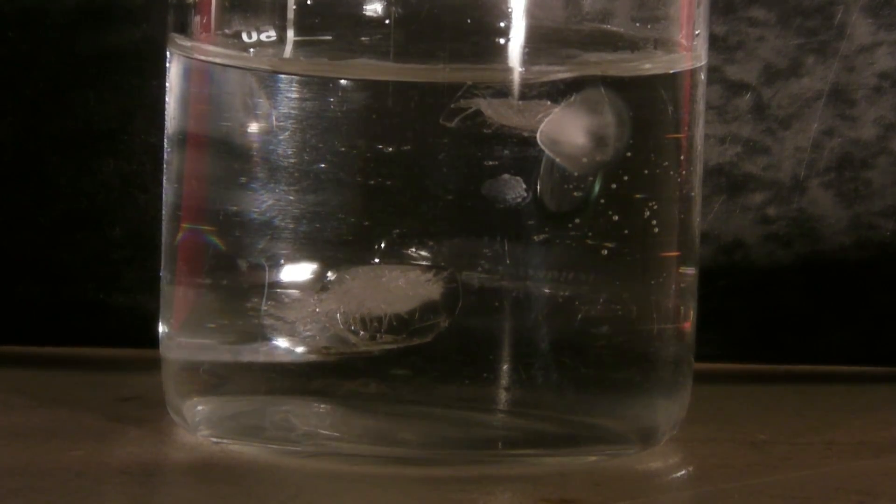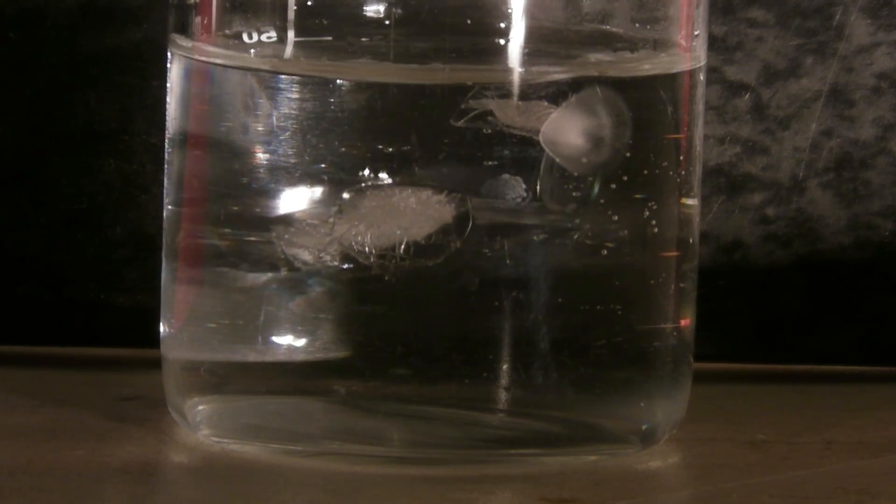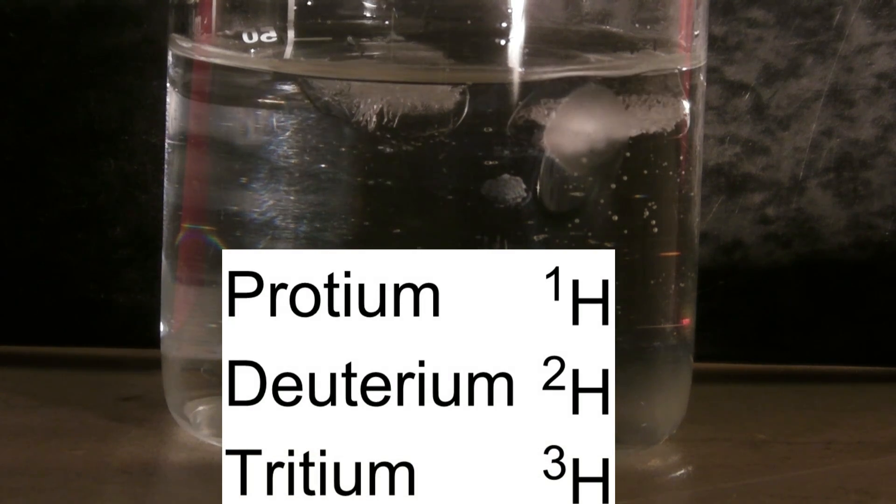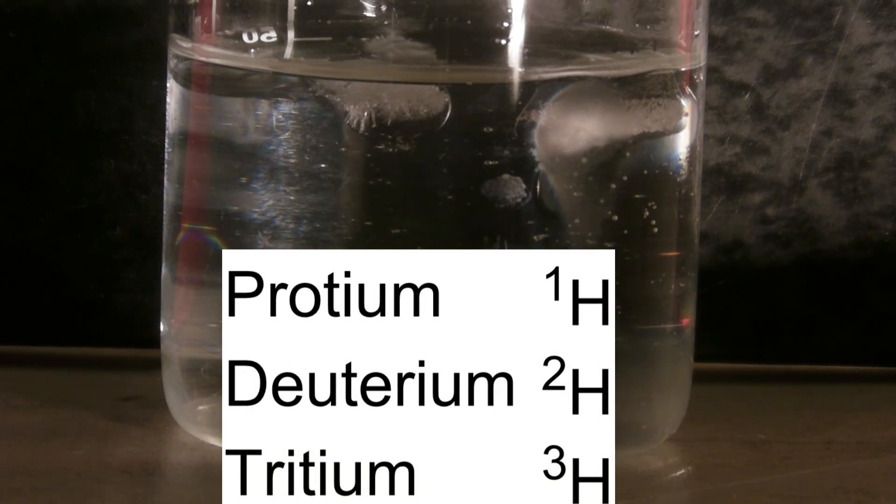Hydrogen has three isotopes: the well-known protium, the heavier deuterium, and the radioactive tritium. Tritium oxide is also called super heavy water.